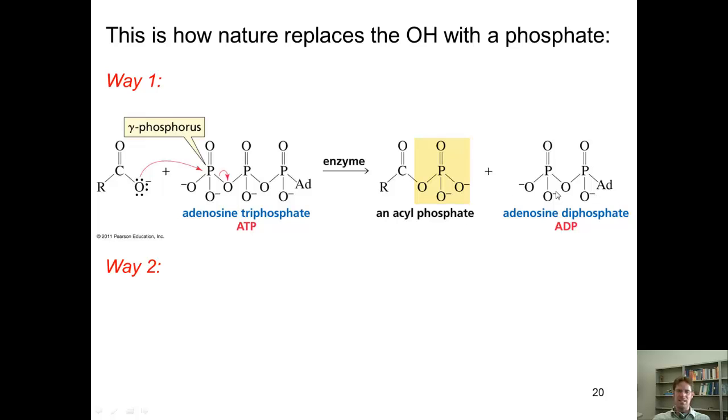the deprotonated acid can attack one of these phosphorus atoms and then displace these electrons to free up an ADP, which is adenosine diphosphate. You then have formed an acyl phosphate, which is an activated carboxylic acid. This phosphate group is a much better leaving group than the OH group.